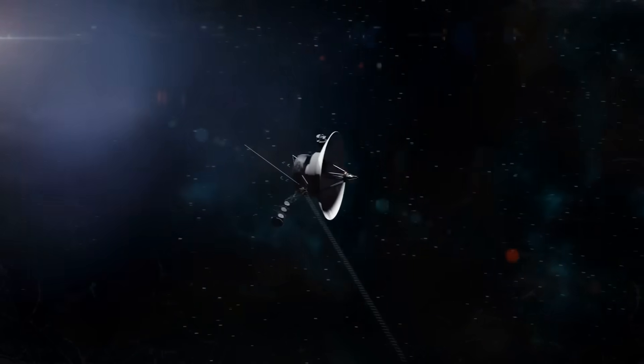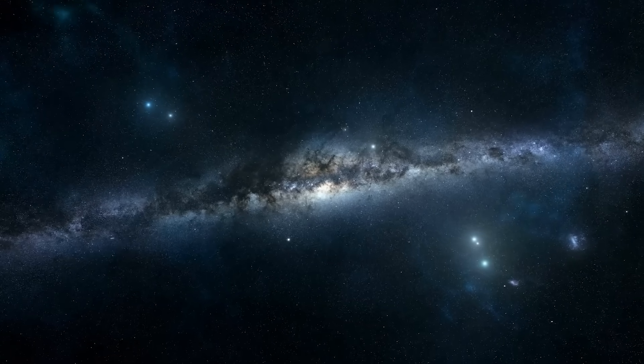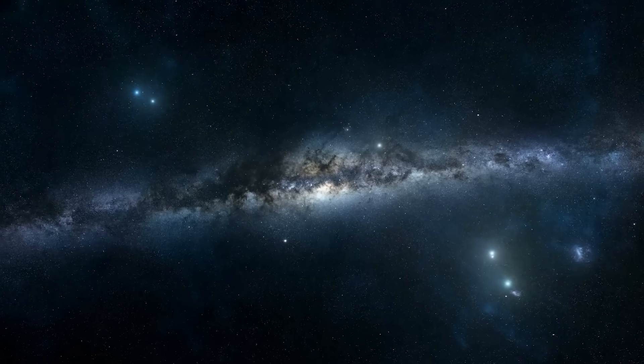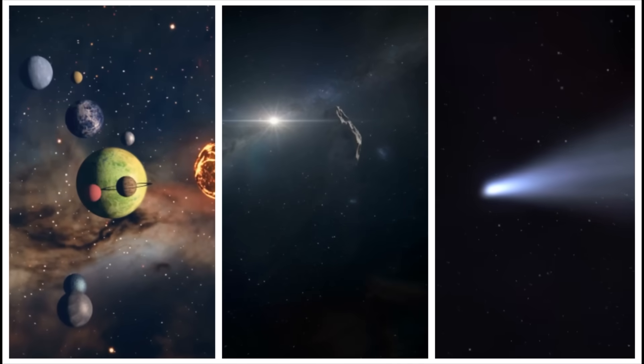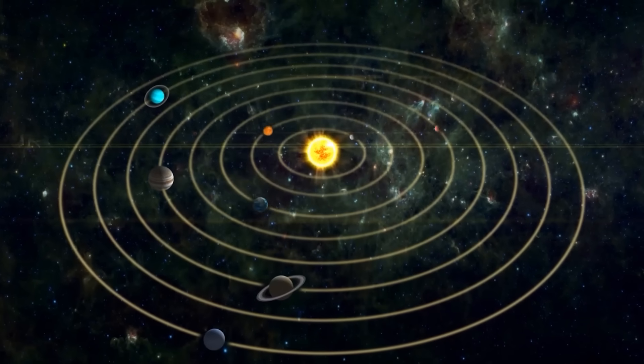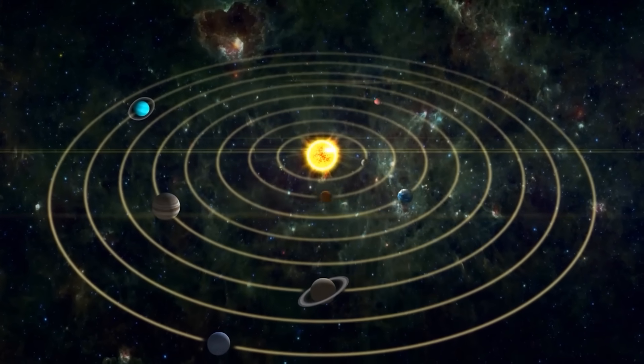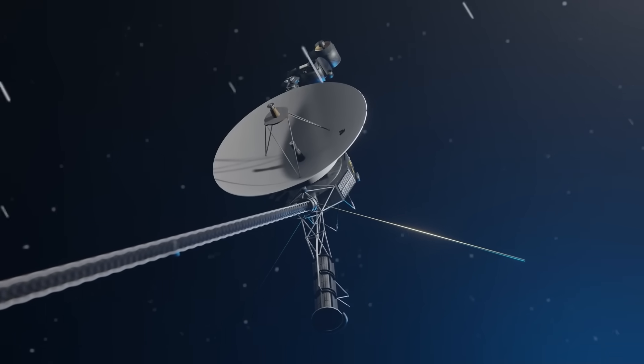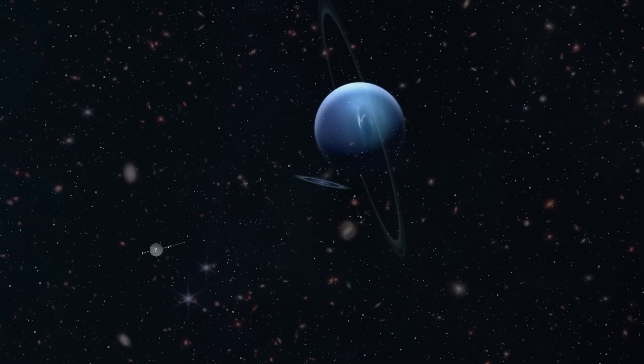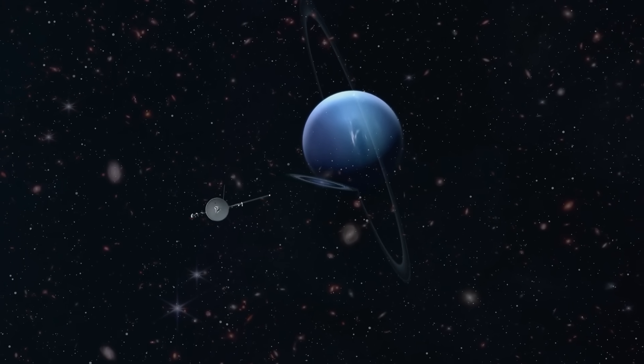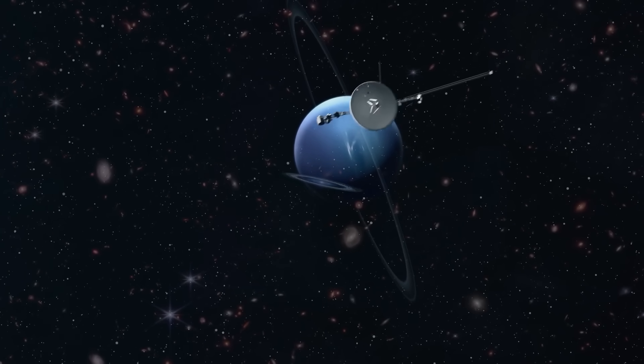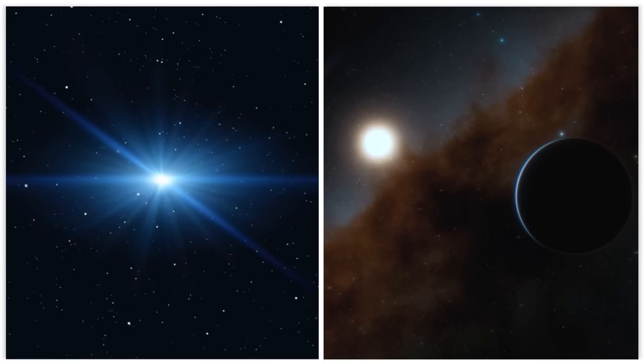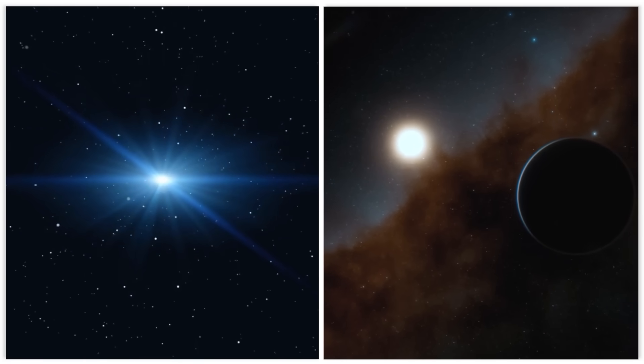But this was no ordinary object. The thing is, everything in space follows the laws of physics. Planets, asteroids, comets, they all move in predictable orbits and paths governed by gravity. This object, however, defied those laws entirely. It didn't coast. It moved in short, controlled bursts, accelerating and decelerating in ways that had no connection to the gravitational pull of any known star or planet.